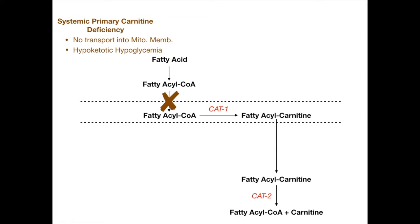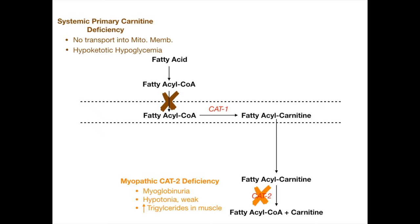The second disease is myopathic CAT-2 deficiency, where CAT-2 is deficient or knocked out. The symptoms include myoglobinuria, hypotonic and weak muscles, and increased triglycerides in muscle. If CAT-2 is knocked out and fatty acyl-carnitine can't be broken down, these carnitine-bound products accumulate in muscle, causing abnormal triglyceride accumulation and muscle breakdown — rhabdomyolysis.